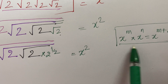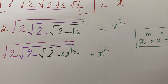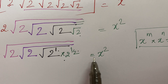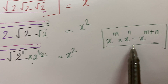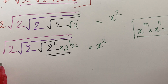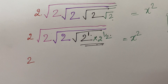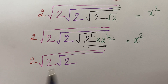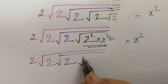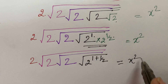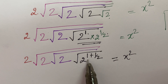Now let us follow the laws of indices. Here the power is 1. So a raised to the power m multiplied by a raised to the power n is equal to a raised to the power m plus n. Apply this law. Now the green will be removed and we will move in this manner. 2 into root 2, inside another root 2, and this I write as 2 raised to the power 1 plus 1 upon 2, equal to x square. Now the denominators are unlike.